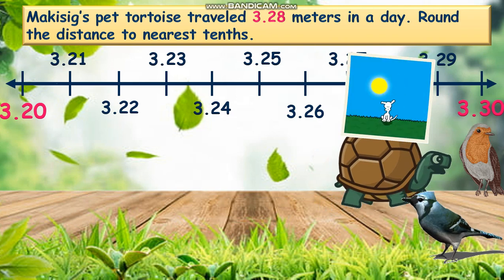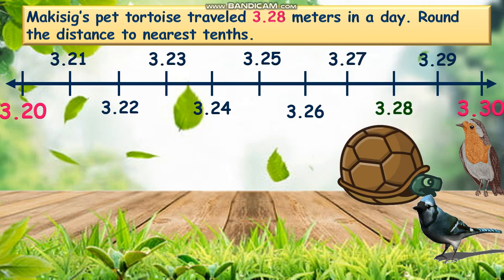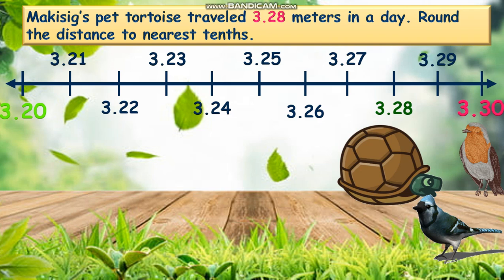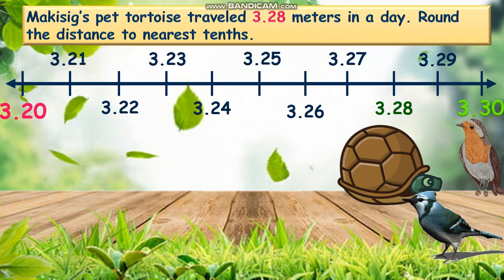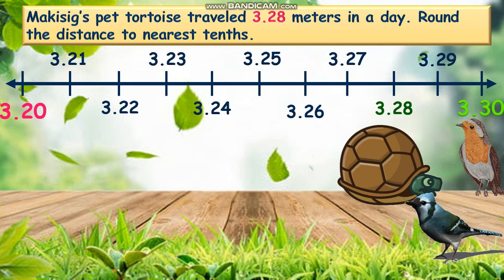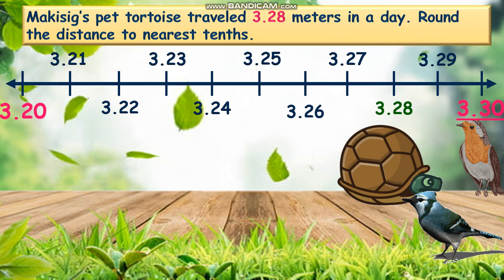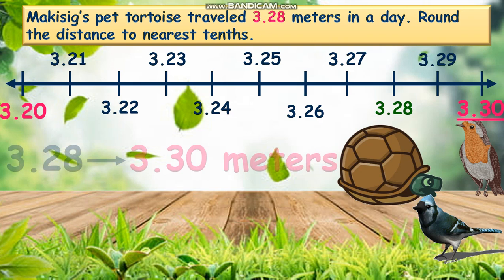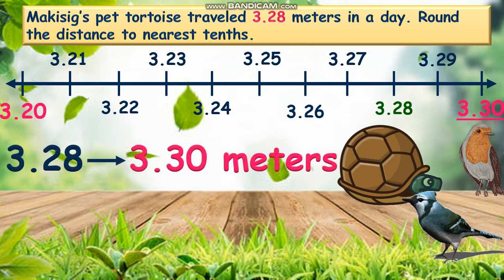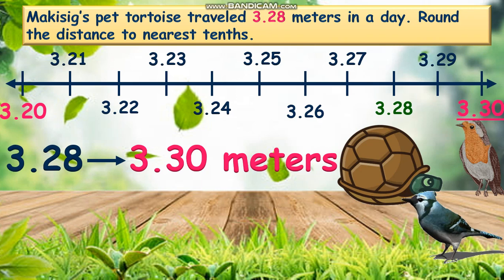Take a look at the decimal 3 and 28 hundredths. Which decimal number is it close to? Is it at 3 and 20 hundredths or at 3 and 30 hundredths? That's right, it's close to 3 and 30 hundredths. Therefore, when we round off 3 and 28 hundredths to the nearest tenths using a number line, the answer is 3 and 30 hundredths. Moccasig's pet tortoise travelled 3 and 30 hundredths metres in one day.